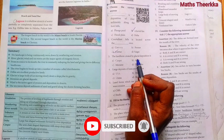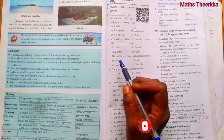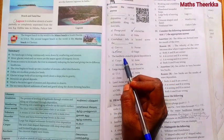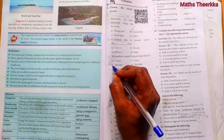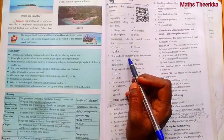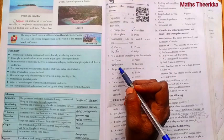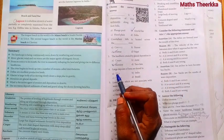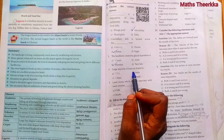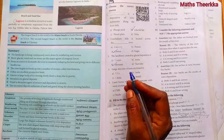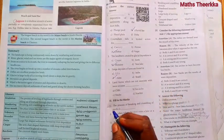the landform created by glacial deposition is moraine. Fourth one, large deposits of loess are found in China. Option C, China.